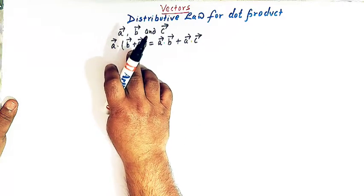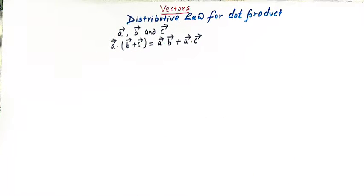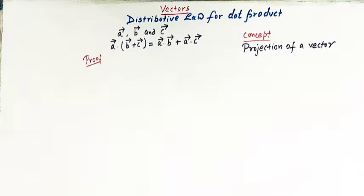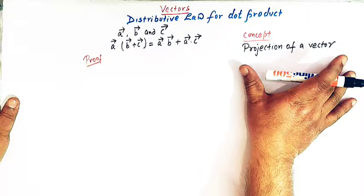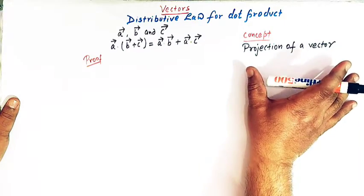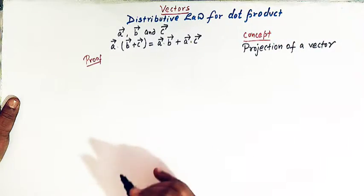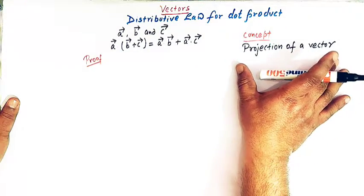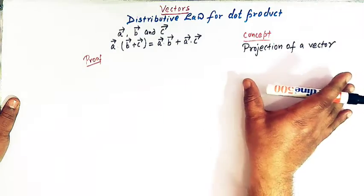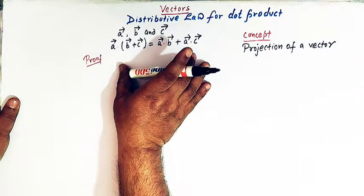We'll see how we can prove this distributive law with the help of a diagram. To prove the distributive law, we'll make use of an important concept called the projection of a vector on another vector. Let us quickly discuss that concept and then apply it to prove this result.